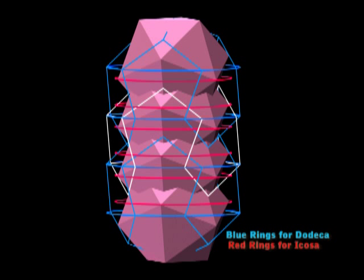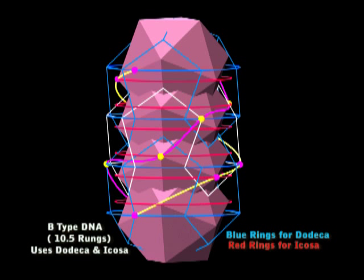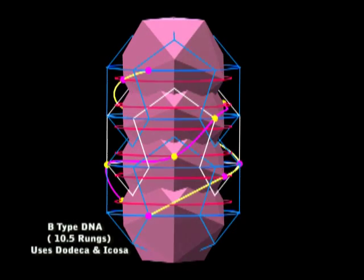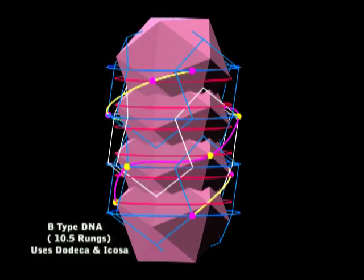And because we used the ICOSA and the dodeca rings, we can now give it a B-type DNA. I guess this is where the major and minor groove stuff comes in, what they found on the microscope.